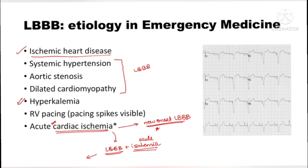Hyperkalemia is a very notorious electrolyte abnormality. It can lead to almost any ECG change — right bundle branch block pattern, left bundle branch block pattern, abnormal ST-T segments, and can even mimic cardiac ischemia. Whenever you see ECG abnormalities that are not explained by a typical pattern and the ECG looks somewhat bizarre, always think about hyperkalemia.